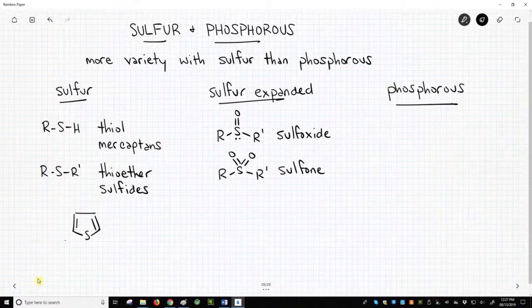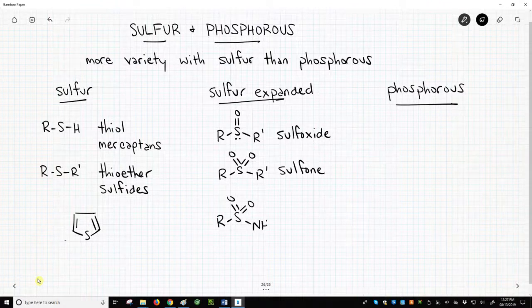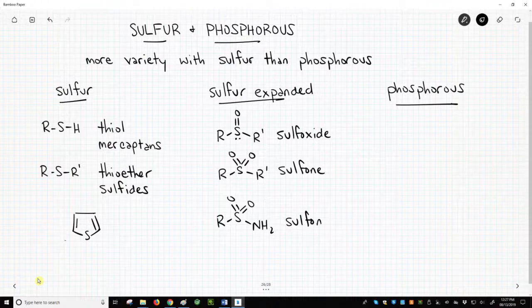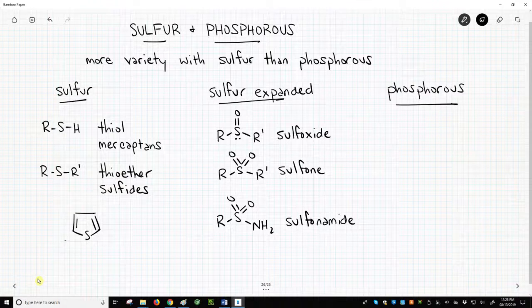One of the most common sulfur functional groups found in drugs is the sulfonamide, which may have additional R-groups in place of the hydrogens on the nitrogen.